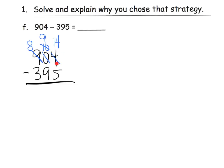So now we have enough ones to subtract five. So 14 take away five gives us nine. And then we have nine tens, take away nine tens, gives us zero. And then we have eight hundreds, take away three hundreds, gives us five hundreds. So there's our answer.